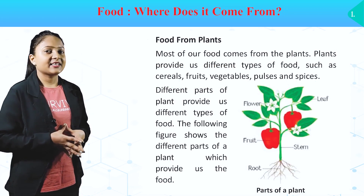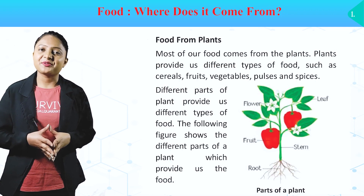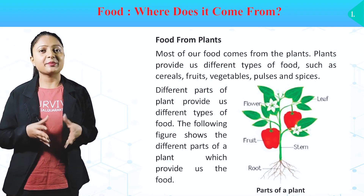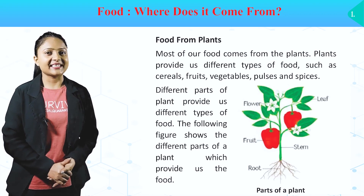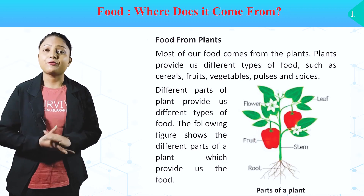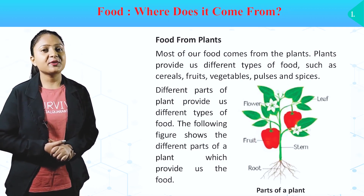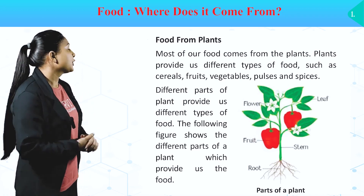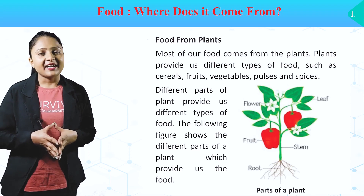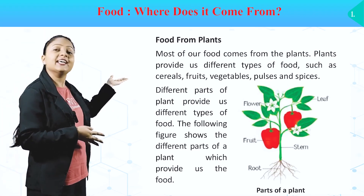Food from plants. Most of our food comes from the plants. Plants provide us different types of food such as cereals, fruits, vegetables, pulses and spices. Different parts of the plant provide us different types of food. The following figure shows the different parts of the plant which provide us food. Aap humain plant ko dekhte hai, aur is plant mein bataya hai kaise plant ke different parts se different kinds of foods milte hai, jaisi ki fruit, roots, stem.